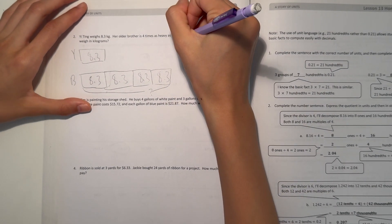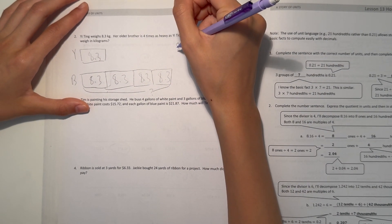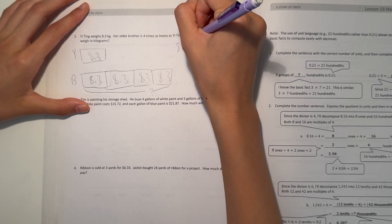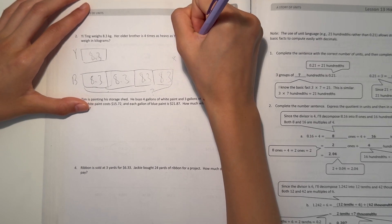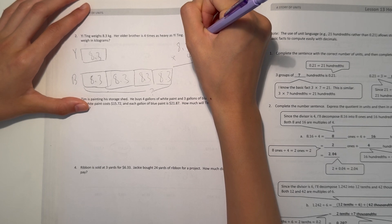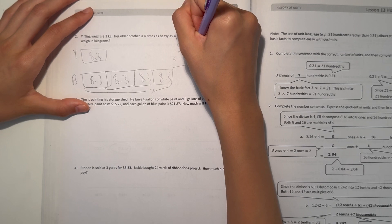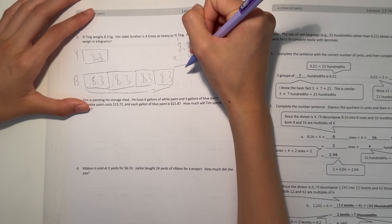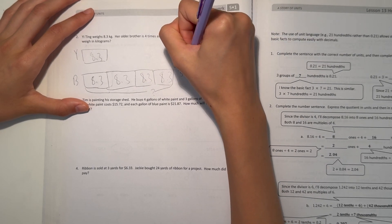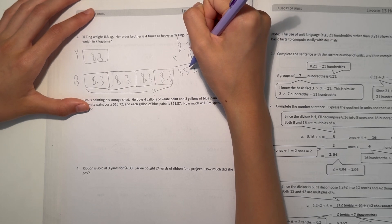So what we can do, we do 8.3 times 4. Alright, so 3 times 4 is 12. And then 8 times 4 is 32, but plus 1 is 35. So our answer is 300.